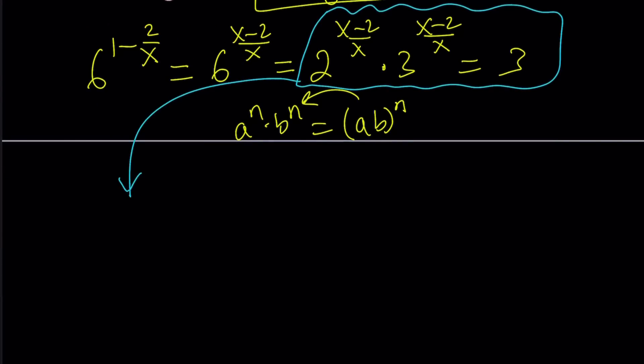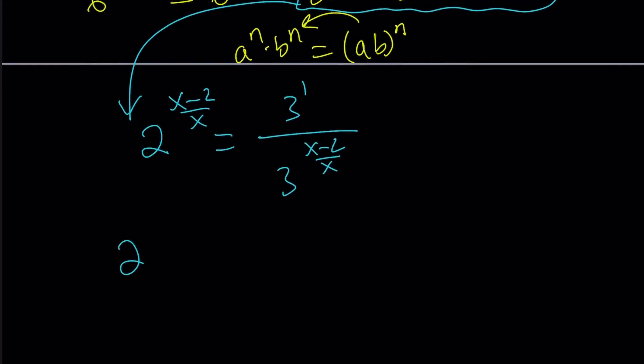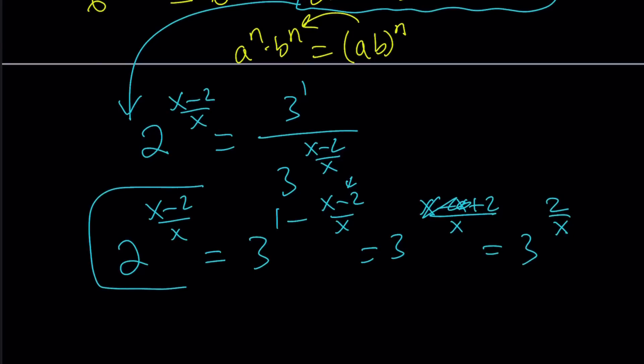So here's what we're going to do. To isolate 2 to the power x minus 2 over x, we're going to divide both sides by 3 to the power x minus 2 over x. This is 3 to the power 1. So we're supposed to subtract the exponents. Let's go ahead and do that. 3 to the power 1 minus x minus 2 over x. And that is 3 to the power x minus x plus 2. Don't forget to negate this negative here, divided by x. And x cancels out, and we end up with 3 to the power 2 over x. So these two are equal.